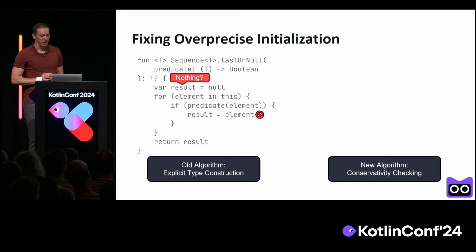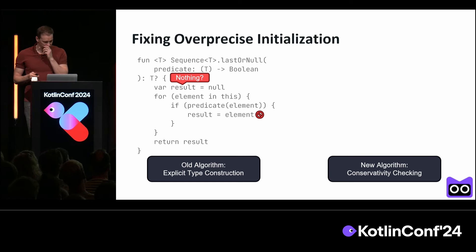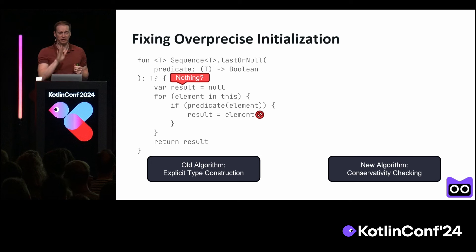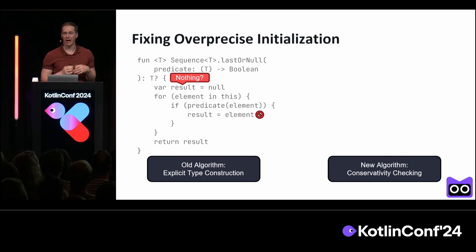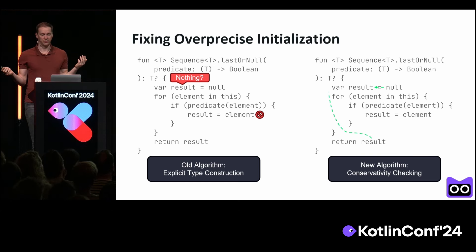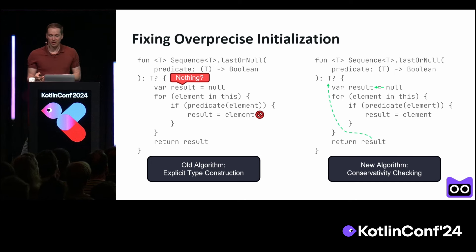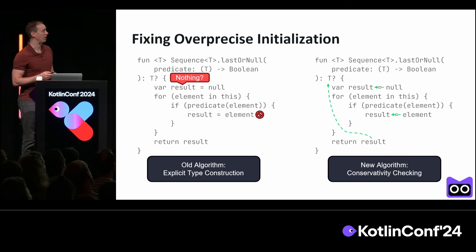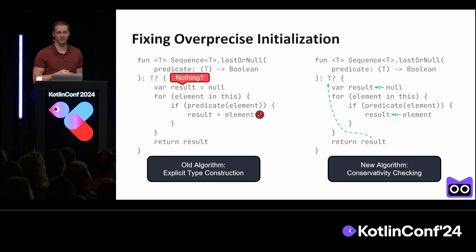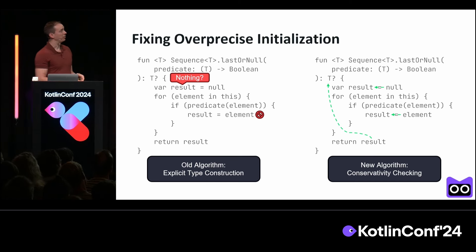The new algorithm works differently. It doesn't actually try to construct any of these types. Instead, it uses what I'm currently calling conservativity checking — it says these types are just holes in the program. Let's suppose I fill in those holes — I'm not going to worry about how, I'm just going to suppose they get filled in. What kinds of flows between my types would happen? In this program, null flows into result, and result flows into T question mark. Is that flow okay? Element is type T, and T is a subtype of T question mark, so that flow is also good. Without knowing what type result is, we can still know this program is safe.